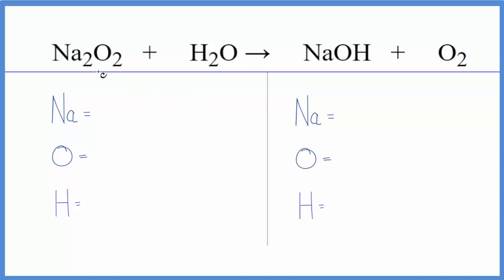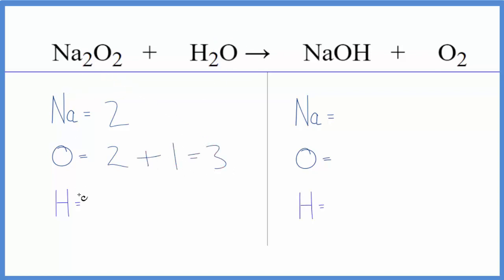Let's count the atoms up. Two sodium atoms, two oxygen atoms, plus don't forget this one here. That'll give us three total oxygen atoms, and then two hydrogen atoms.